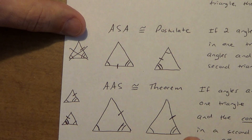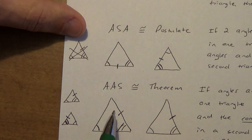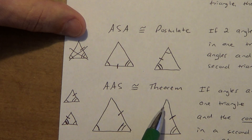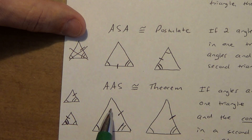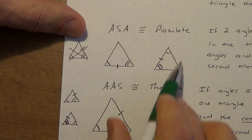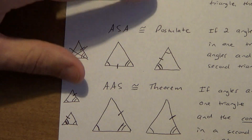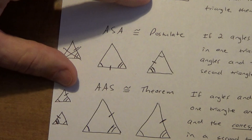AAS can be proven true using angle-side-angle and the third-angles theorem. If two angles in one triangle are congruent to two angles in another, the third angles are automatically congruent too. That gives you angle-side-angle, which is exactly how you prove AAS works.